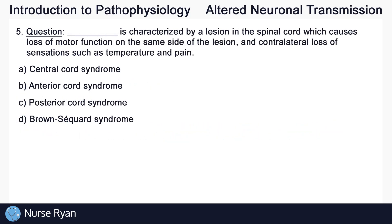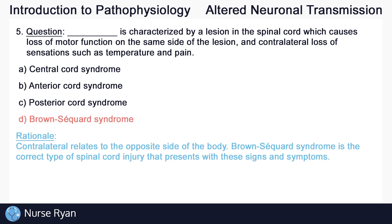Question number five: blank is characterized by a lesion in the spinal cord which causes loss of motor function on the same side of the lesion and contralateral loss of sensations such as temperature and pain. The answer here is D, Brown-Séquard syndrome. Contralateral relates to the opposite side of the body. Brown-Séquard syndrome is the correct type of spinal cord injury that presents with these signs and symptoms.